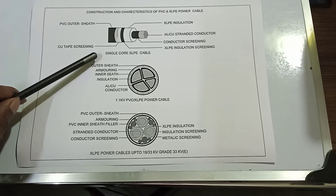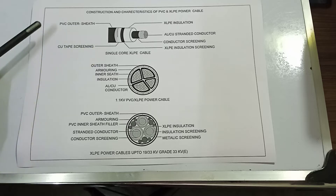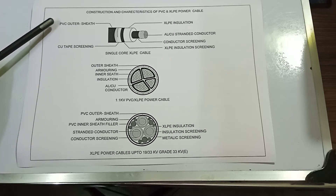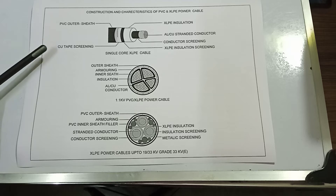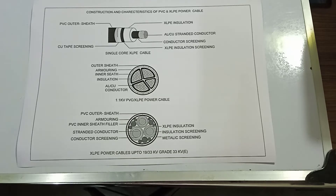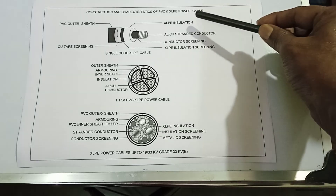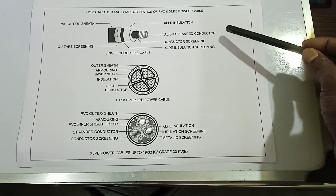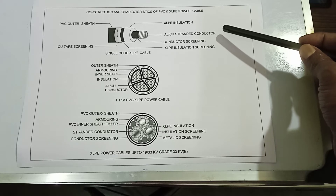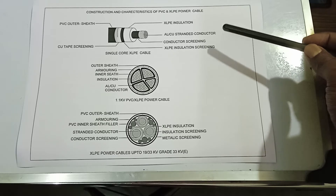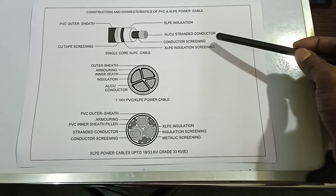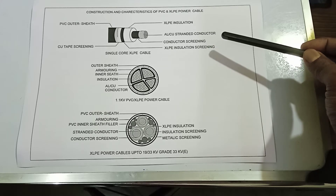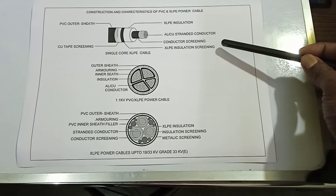Here is a single core XLPE cable. It has a PVC outer sheath, copper tape screening, XLPE insulation, aluminium or copper standard conductor, conductor screening, and XLPE insulation screening.